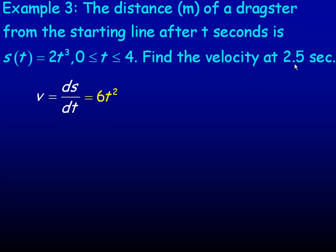We're looking for the velocity at two and a half seconds. So we put two and a half in place of time and evaluate that. So two and a half squared is 6.25 multiplied by six is 37.5 meters per second. That's how fast the dragster is going at two and a half seconds.